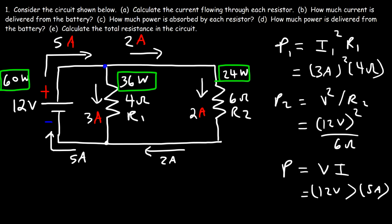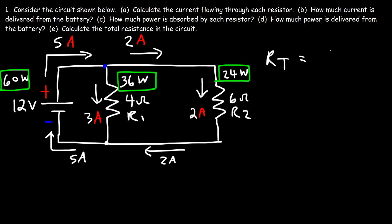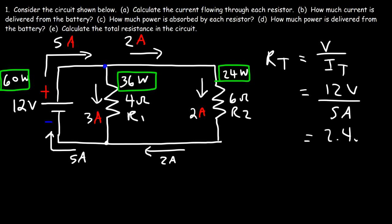Now let's move on to the last part: calculate the total resistance in the circuit. There are two ways to do this. The first way is to take the voltage of the battery and divide it by the total current in the circuit. We have a 12-volt battery and 5 amps of total current, so it's 12 divided by 5. The equivalent resistance of this circuit is 2.4 ohms.